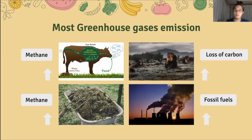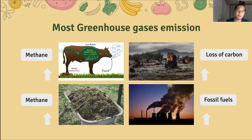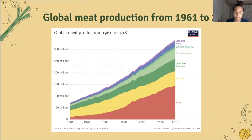Most greenhouse gas emissions come from three things: methane release from enteric fermentation and particularly from animal manure; loss of carbon stored in forests and soils from land use change and degradation; and fossil fuels burned to produce mineral fertilizers for feed production. The first of these is methane, as shown on the slide. As you can see in this chart, global meat production continues to rise, and consequently greenhouse gas emissions will grow too, which is very bad for our Earth.